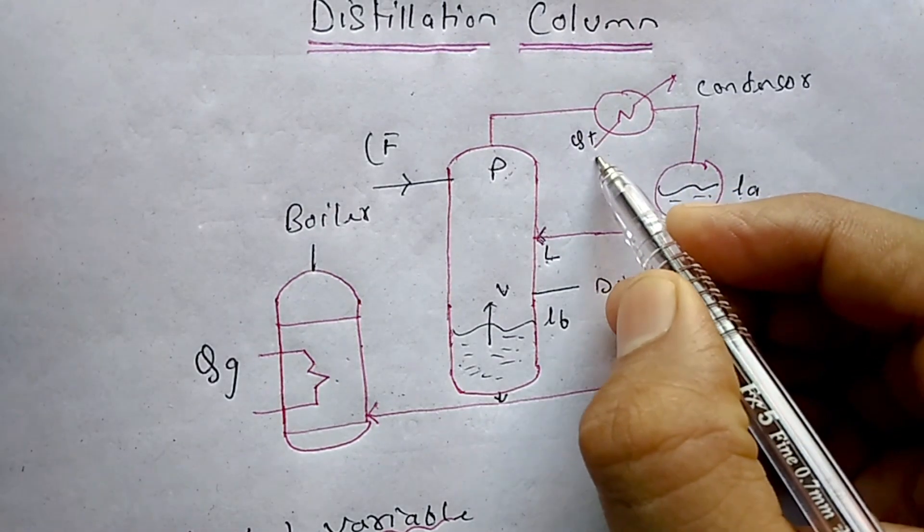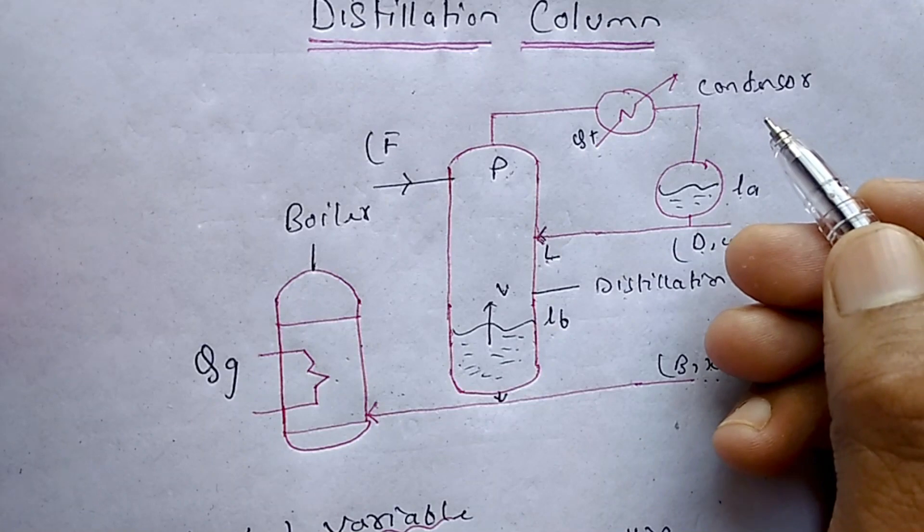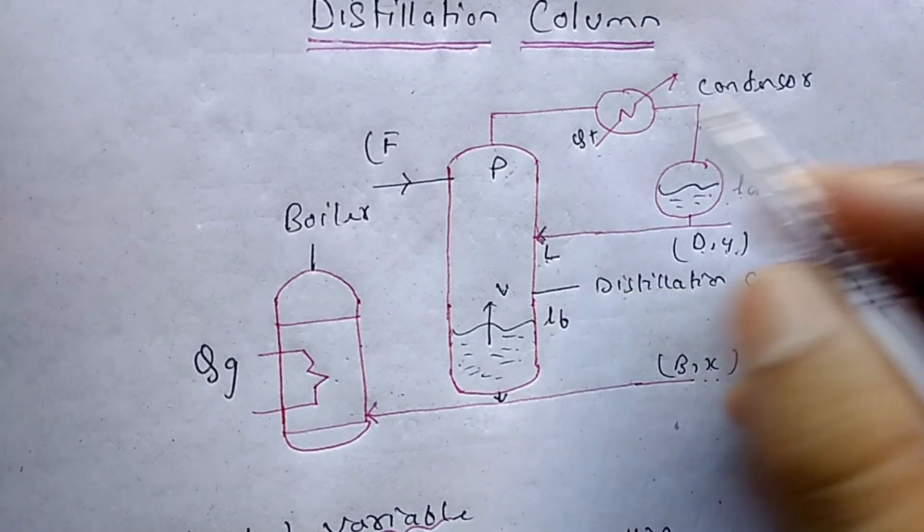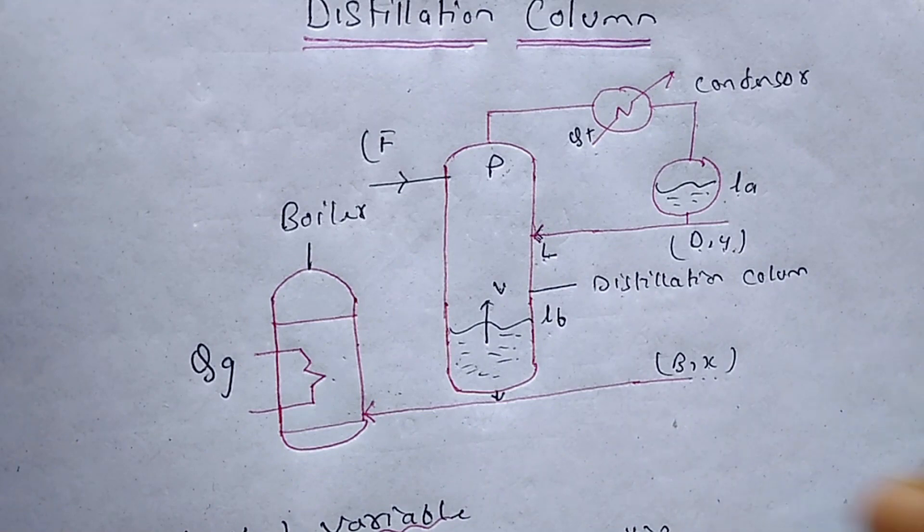This QT is the cooling rate of condenser. What is the work of condenser? Condenser converts vapor to liquid. And this QG is the heating rate of boiler.